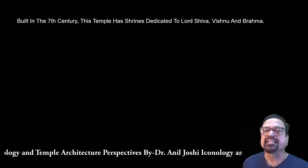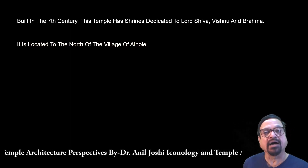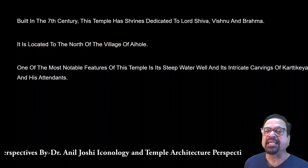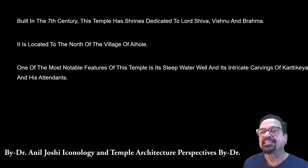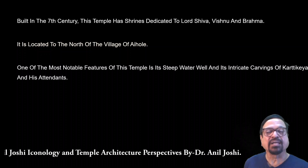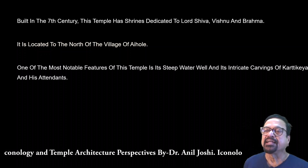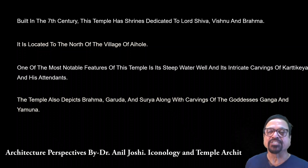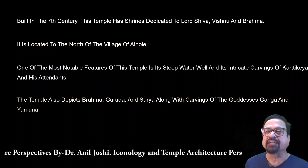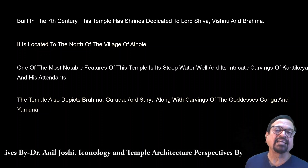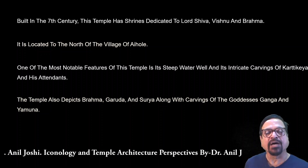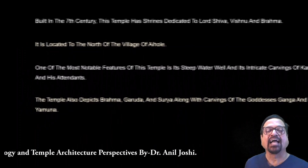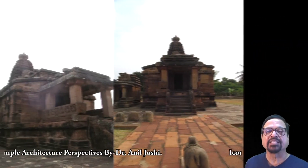Built in the 7th century, the shrines are dedicated to Shiva, Vishnu, and Brahma — that is, the Brahma, Vishnu, Mahesh trinity. One of the notable features of this temple is a step well, or Pushkarani, which is a water source always present in Dravidian type temples. The carvings indicate Kartikeya and his attendants. The temple also depicts Brahma, Garuda, and Surya, along with carvings of Goddess Ganga and Yamuna. This is the influence of the north — Ganga and Yamuna as Dwarapalas present in the temple were first introduced in North India but subsequently adopted in South India as additions or carvings in temples.